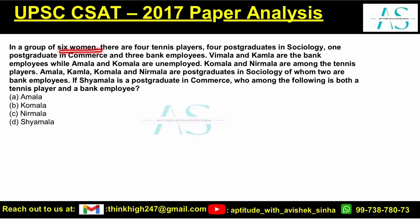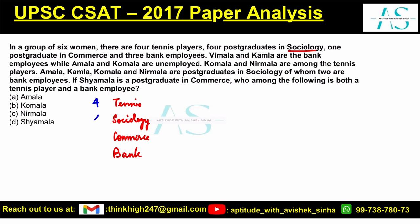In a group of six women, there are four tennis players. Some people are tennis players. So I'm writing tennis players, or simply tennis. Four are post-graduates in sociology. One post-graduate in commerce. And three are bank employees. So the count is: four tennis, four sociology, one commerce, three bank.